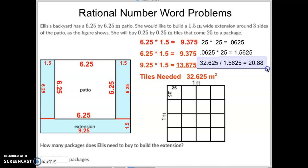So the question becomes, how many packages do we need to buy? Well, they won't sell you a partial package. They won't say, oh, we'll give you 0.88 of a package. You need to buy an entire package, so we always have to round up in this situation. So we would need to buy 21 packages.